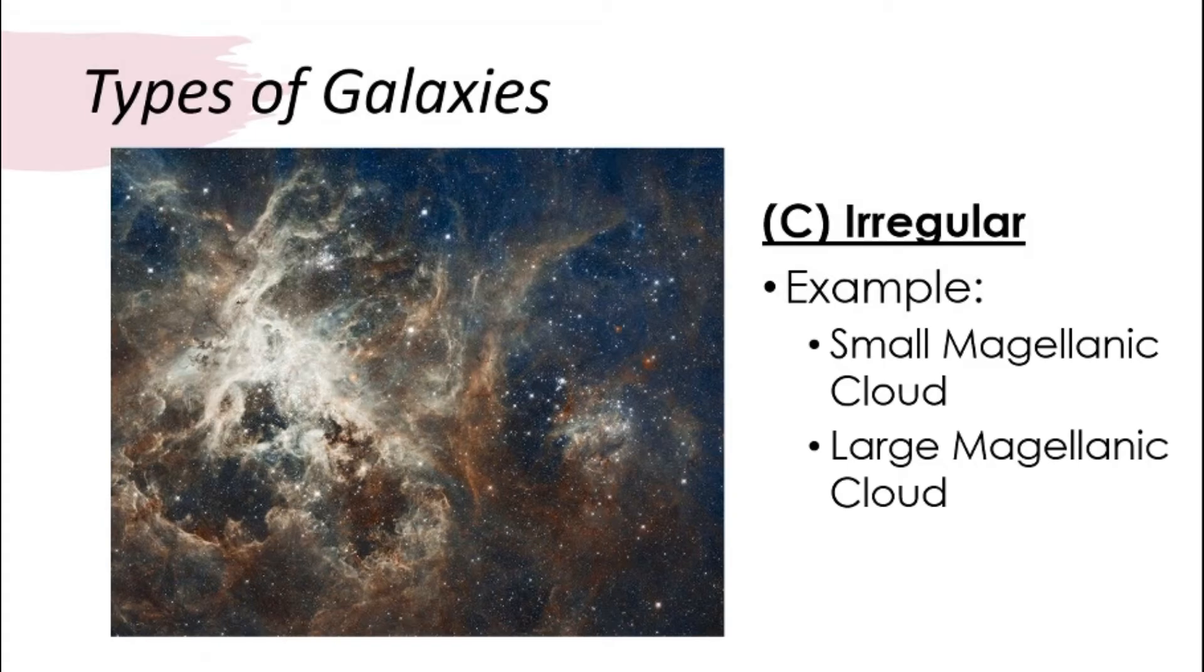Look at how beautiful that is. This is an irregular galaxy. It does not really have a particular shape, but it is still very beautiful, isn't it? Some examples of irregular galaxies are Small Magellanic Cloud and Large Magellanic Cloud.